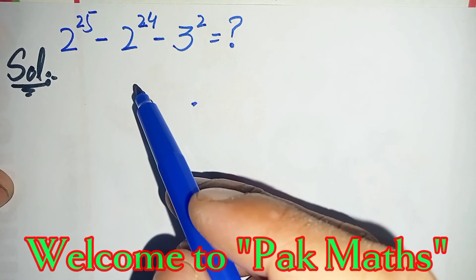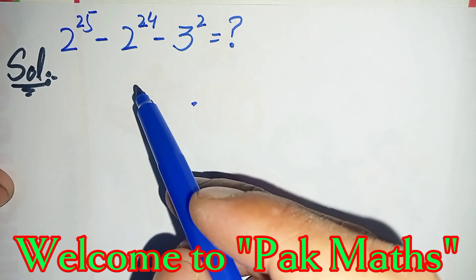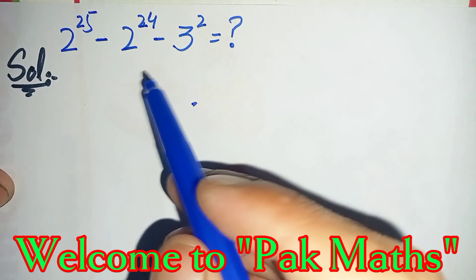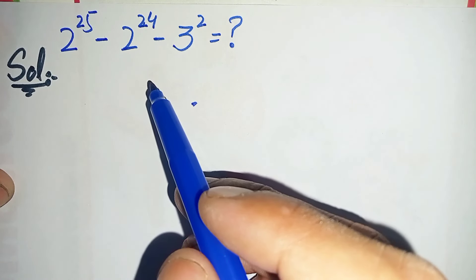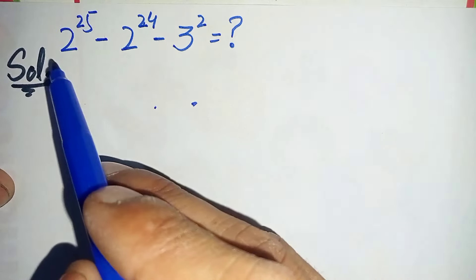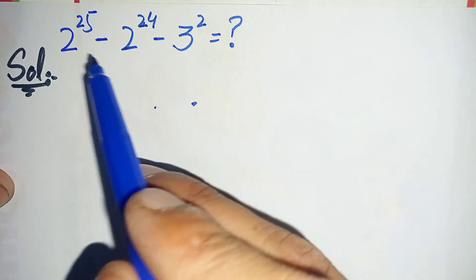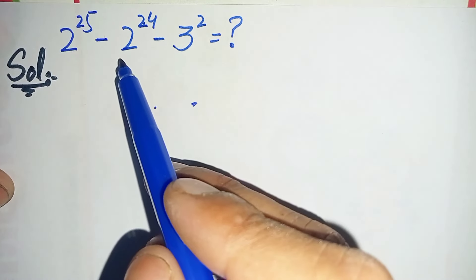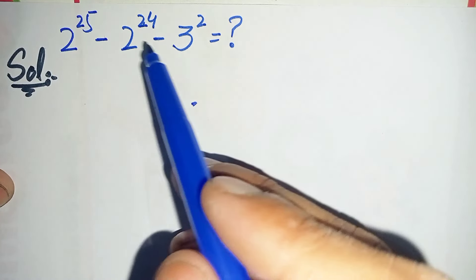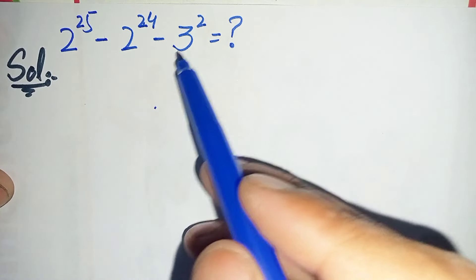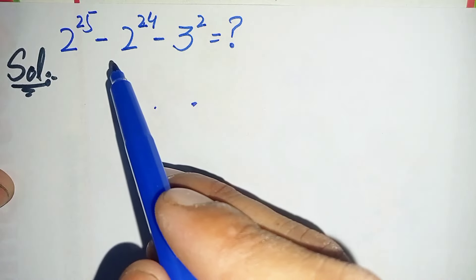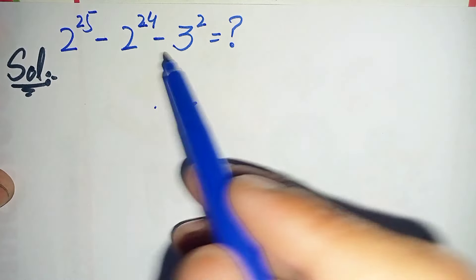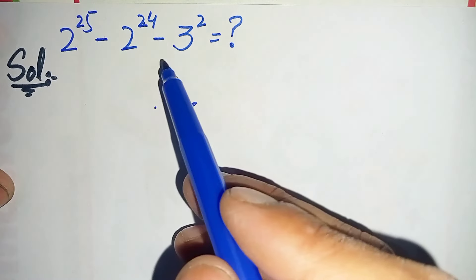Hello, you are welcome to Parkmas. How to solve this nice simplification math problem: 2 raised to power 25 minus 2 raised to power 24 minus 3 square. Here I will try to find the value of this simplification problem.